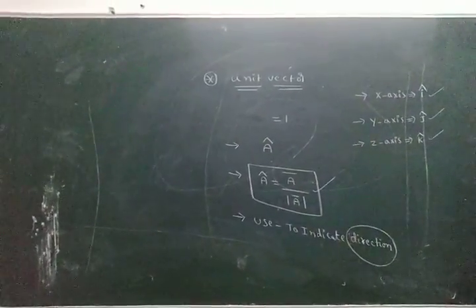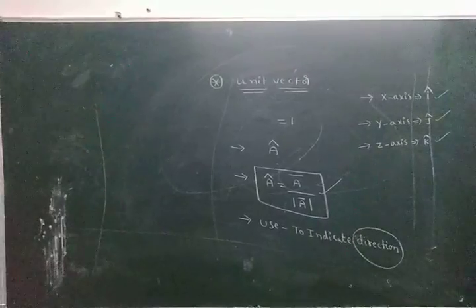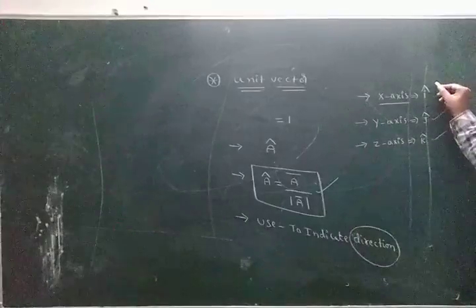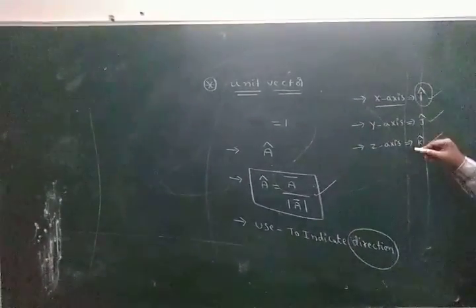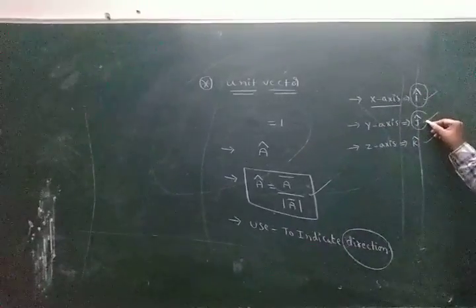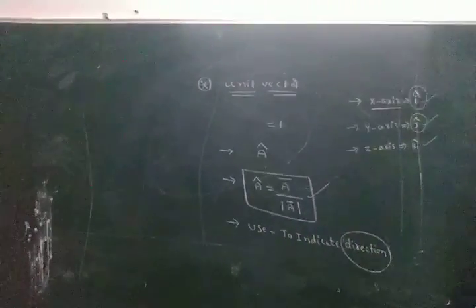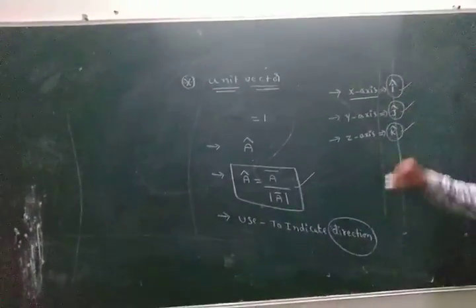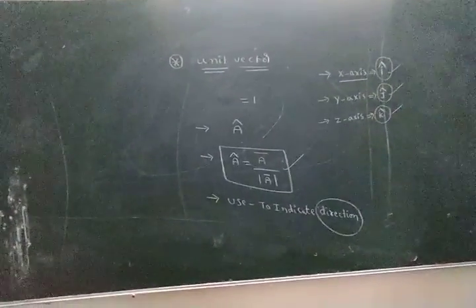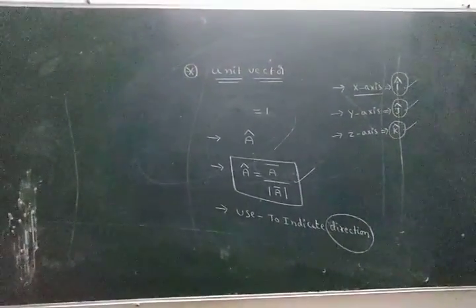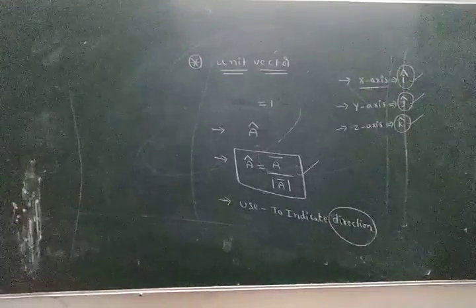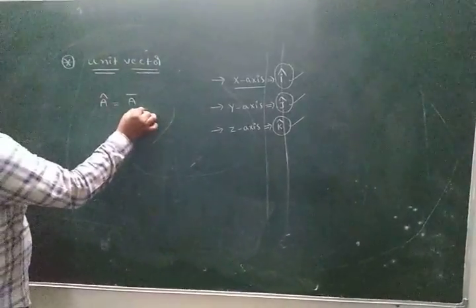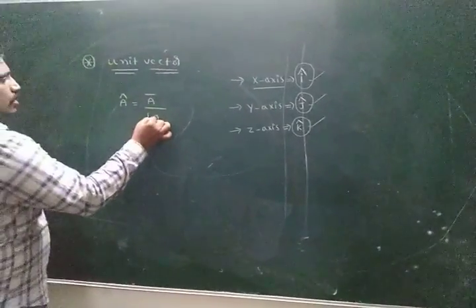The unit vector has no units. For example, a body moving along the X axis: unit vector denoted by î. Body moving along Y axis: unit vector denoted by ĵ. Body moving along Z axis: unit vector denoted by k̂. The representation: a_cap = ā / |ā|.